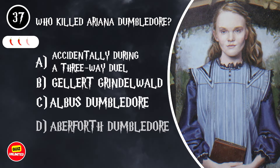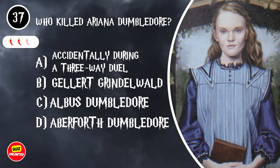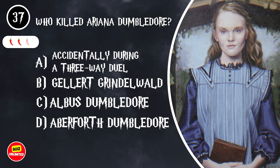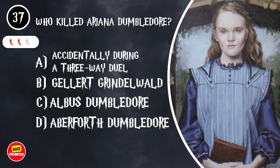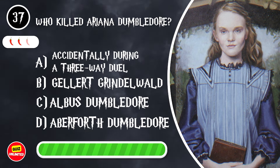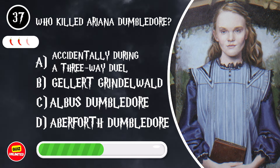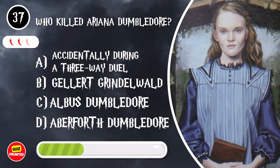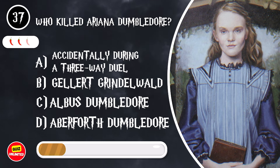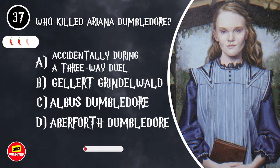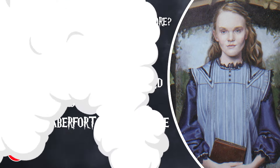Who killed Ariana Dumbledore? A. Accidentally, during a three-way duel. B. Gellert Grindelwald. C. Albus Dumbledore. D. Aberforth Dumbledore. It's A. Accidentally, during a three-way duel.